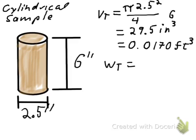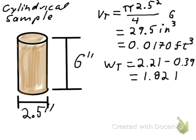We're also able to determine the total weight of the sample. The weight of the sample plus the soil plus the sampler was 2.21 pounds. The weight of the empty sampler was 0.39 pounds, so if we subtract those two numbers, we get the weight of the soil in the sampler, which is 1.82 pounds.